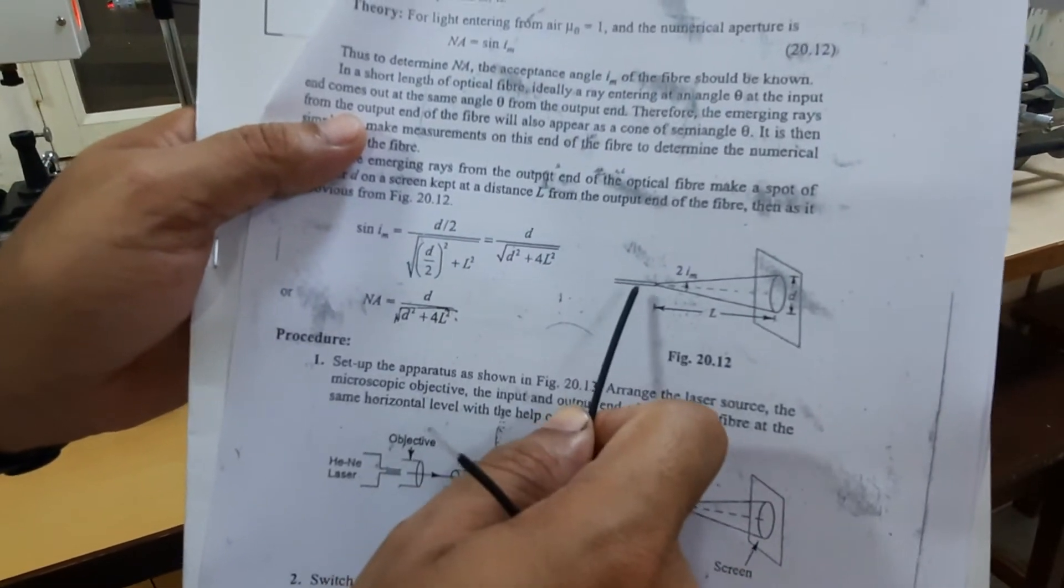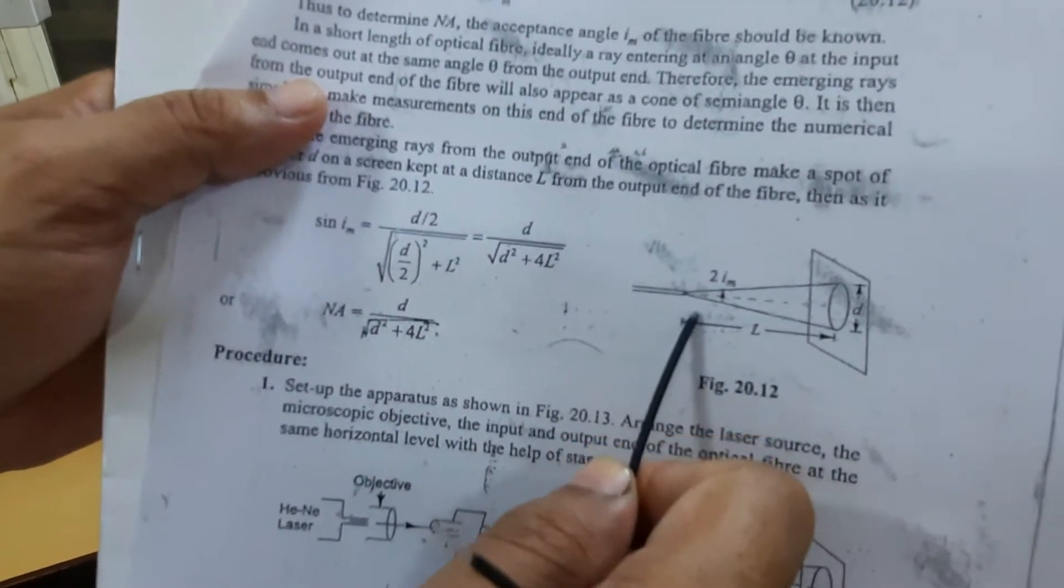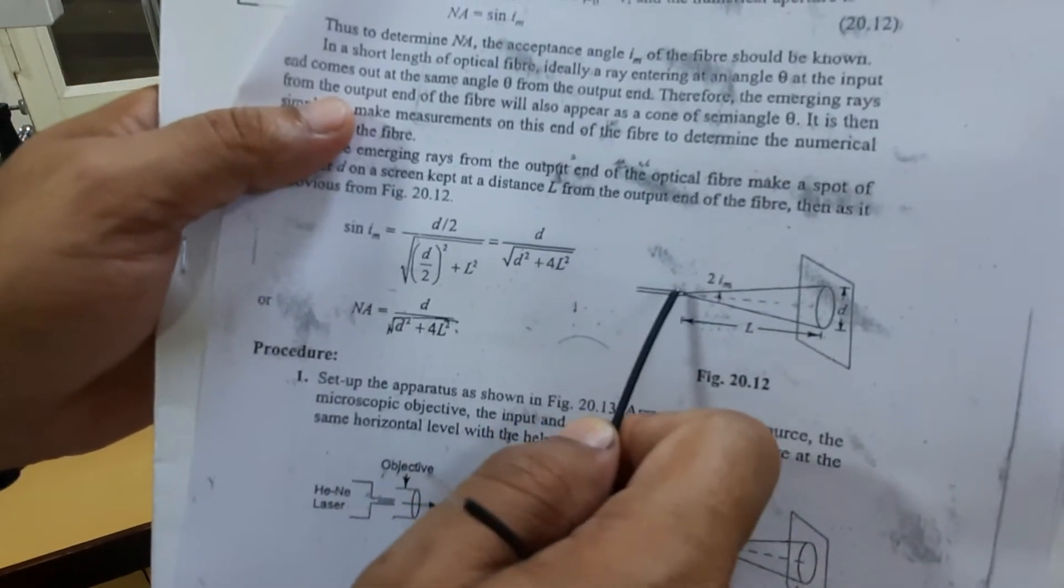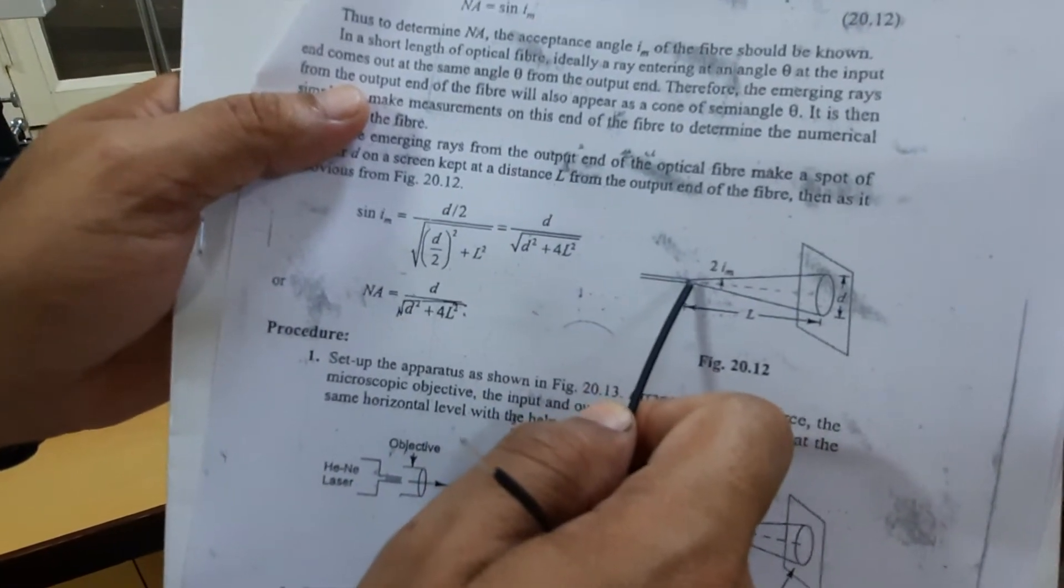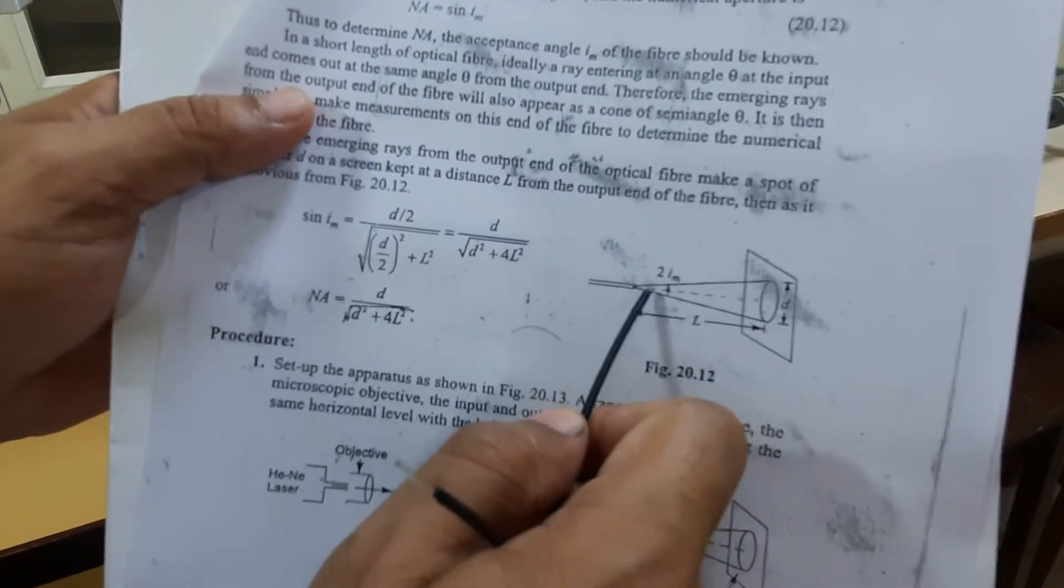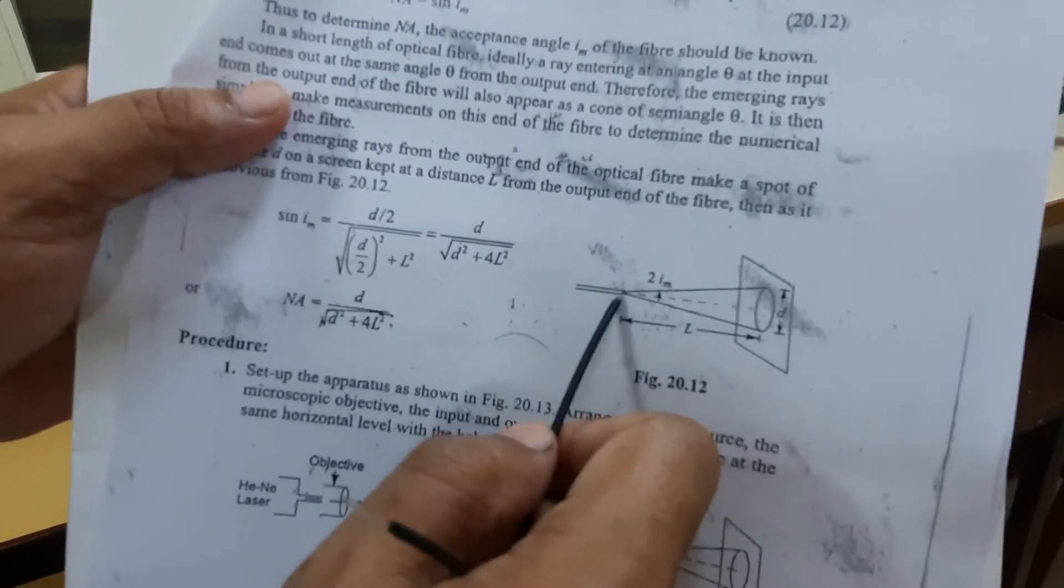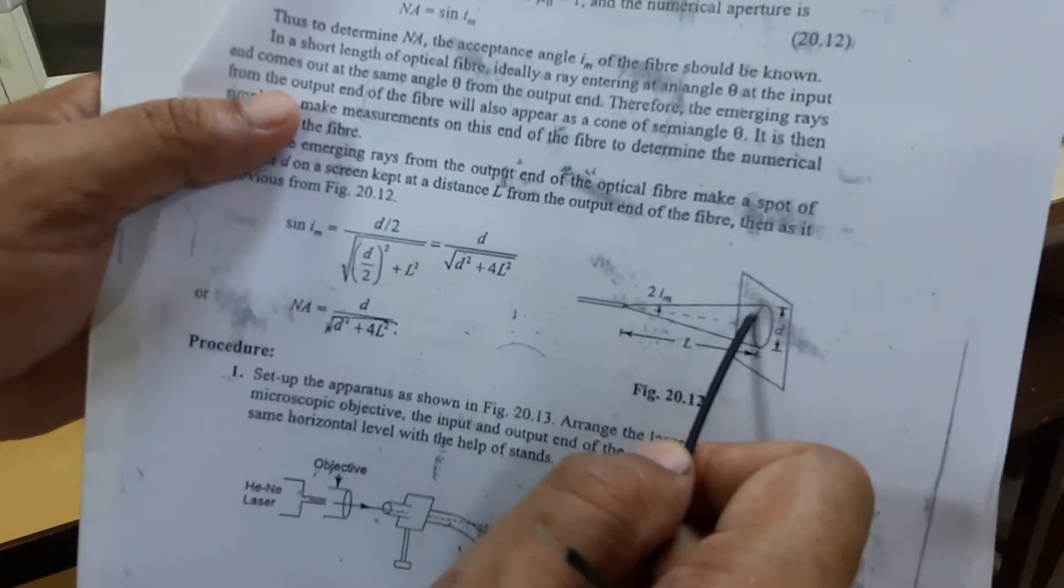And then because as the input goes into the fiber optic cable, comes out in the similar fashion, so we can use this fact that whenever the light is coming out of the fiber optic cable, we can calculate this circle...